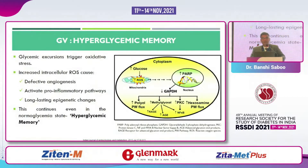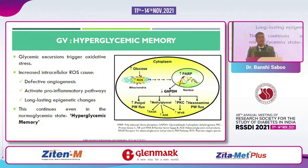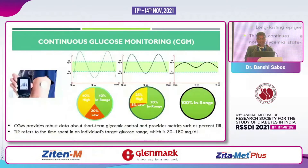Talking about hyperglycemic memory — glycemic excursions trigger oxidative stress. This increased oxidative stress causes defective angiogenesis, activates pro-inflammatory pathways, and produces long-lasting epigenetic changes, resulting in hyperglycemic memory. Someone who has uncontrolled diabetes will carry a memory of bad glycemic control.